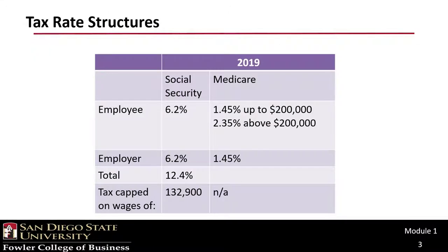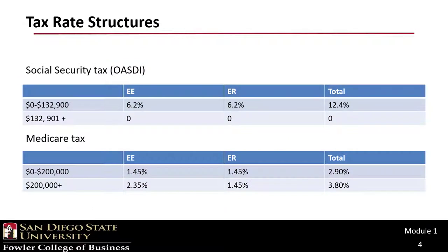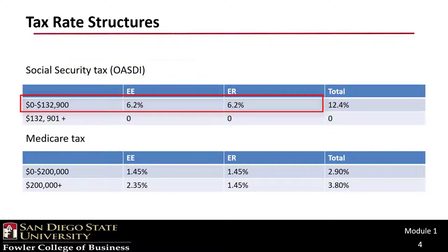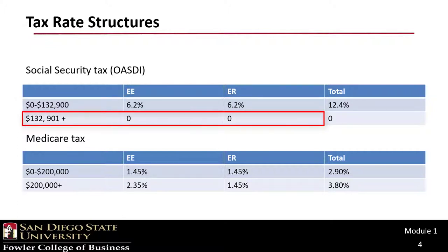This table should look familiar. It's the employment or FICA tax structure we used earlier to compute employment taxes. Although this is frequently the format in which this tax rate structure is presented, on this slide I have presented it in a fashion more similar to that of the income tax tables, with the base — in this case wages — on the left, and the rates for each bracket. If we look at the OASDI table, the tax rate is 6.2% for employees and employers up to the FICA cap.